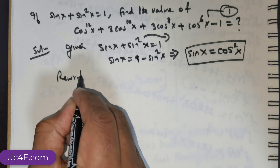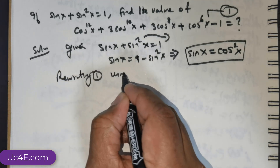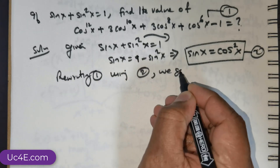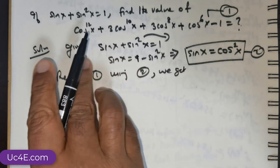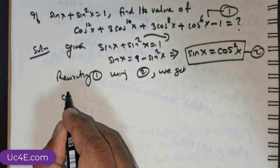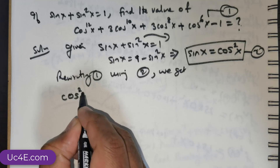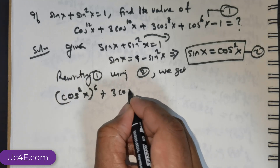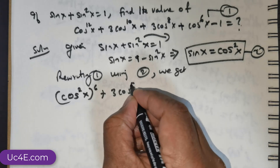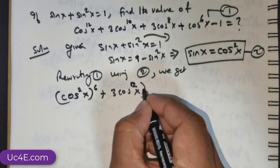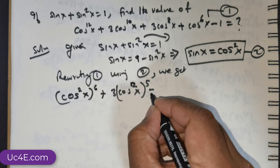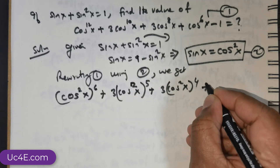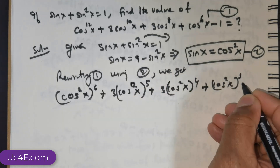Rewriting, I take this as step 2. I need to represent cos¹²x as (cos²x)⁶, positive 3 times (cos²x)⁵, positive 3 times (cos²x)⁴, positive (cos²x)³, negative 1.